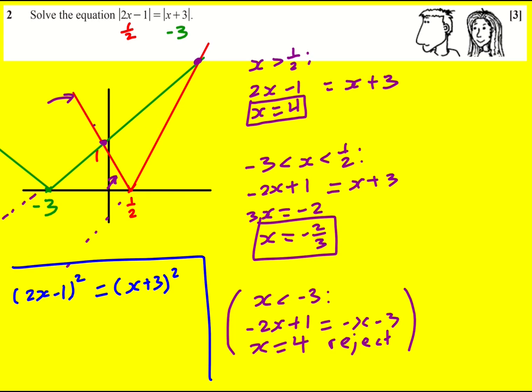If you had a squared term inside, you'd end up with a quartic equation. But here we get away with just a quadratic to solve. So (2x-1)² = (x+3)² gives 4x²-4x+1 = x²+6x+9, which simplifies to 3x²-10x-8 = 0.